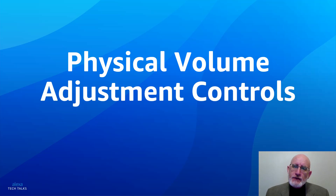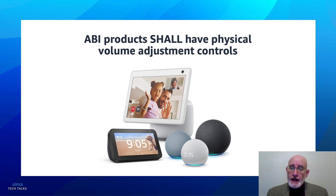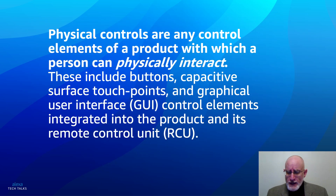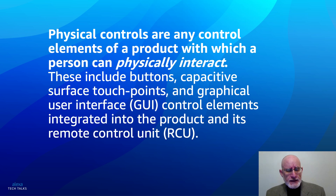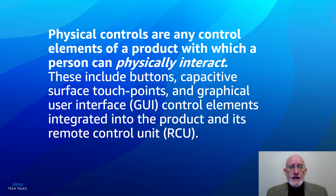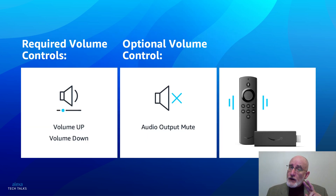Let's talk about physical volume adjustment controls. It is a fundamental requirement that all Alexa built-in products shall have physical volume adjustment controls. Physical controls are any control elements of a product with which a person can physically interact. These include buttons, capacitive surface touch points, graphical user interface control elements, etc., integrated into the product and its remote control unit. There are two required volume adjustment controls: volume up and volume down.